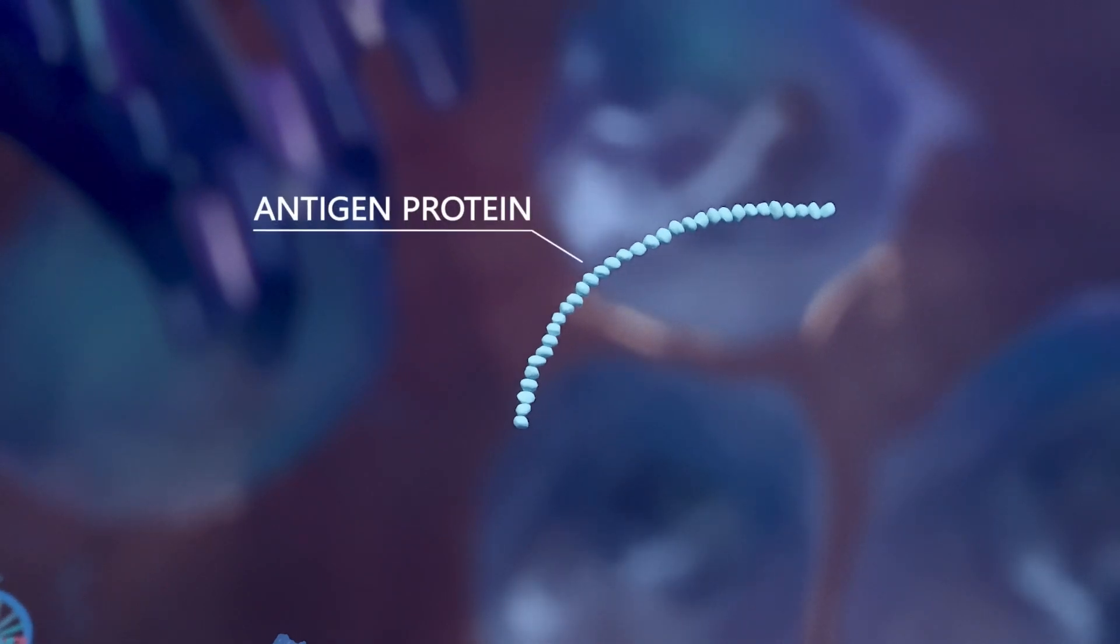This antigenic protein is what will ultimately stimulate the immune system. In the case of a COVID-19 vaccine, it will be the coronavirus spike protein.